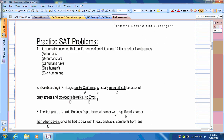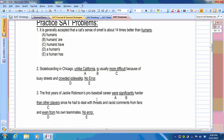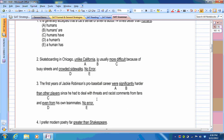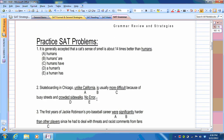Here are some practice SAT problems that deal with illogical comparisons. You could see this in either the improving sentences format or the identifying error format. So one and four are in the improving sentences format. Two and three are in the identifying error format. So start number one. It is generally accepted that a cat's sense of smell is about 14 times better than a human, or than a human's. That's how I would say it. So I'll go with D on that one, so that way the comparison is logical.